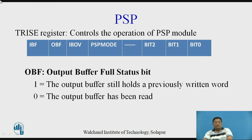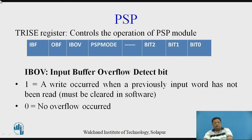OBF equal to 0 means the output buffer has been read by the master. IBOE, called the input buffer overflow detect bit, will be set when a write occurs while a previously received input word has not been read. This bit must be cleared in software.